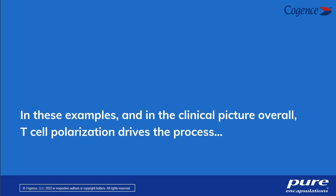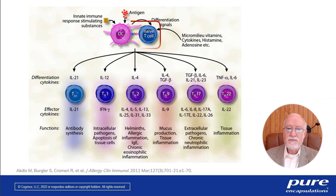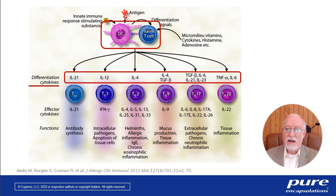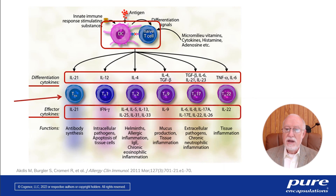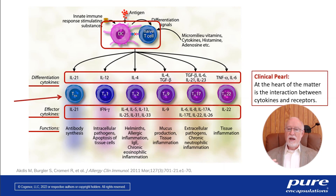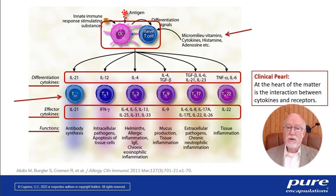Everything shown so far reinforces that T-cell polarization is at the center of this. A dendritic cell hands a fragment of antigen to a naive T-cell, which determines what kind of T-cell it becomes depending on which cytokines are presented. That determines effector cytokines, which determines what kinds of functions you have. At the heart of the matter is the interaction between cytokines and their receptors. The micromilieu — vitamins, cytokines, histamine, adenosine — also plays a role in T-cell polarization.